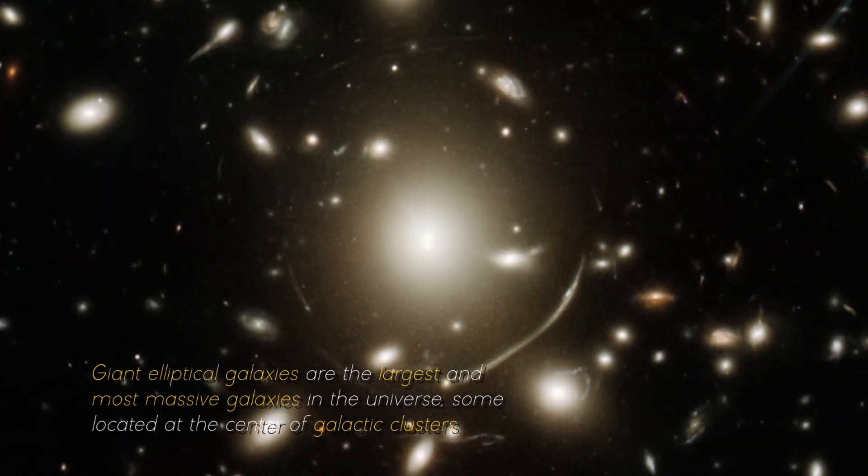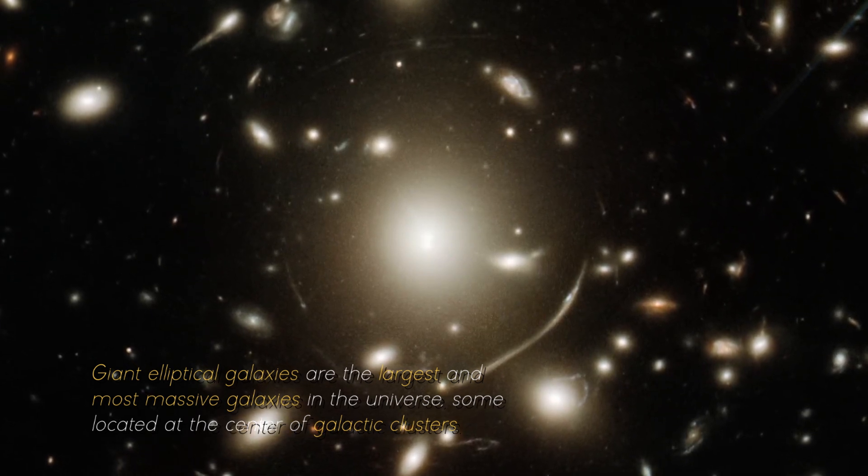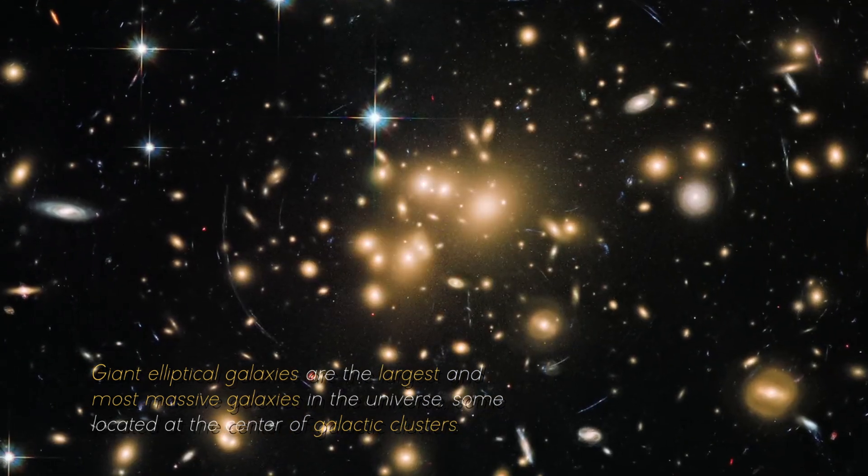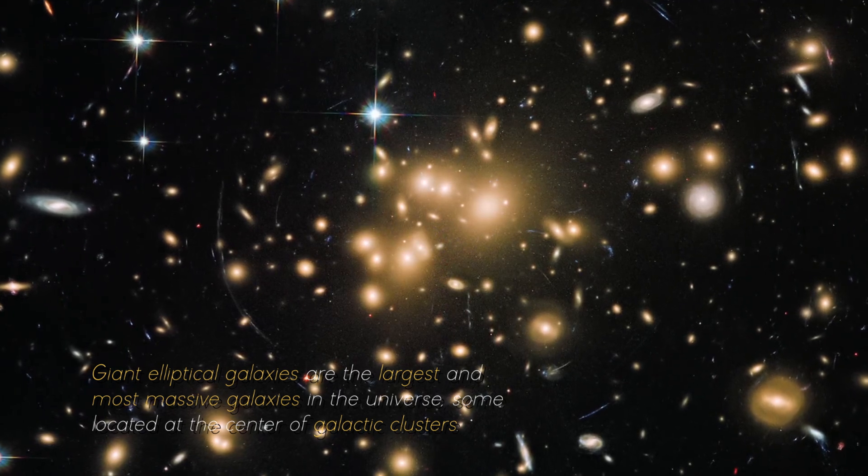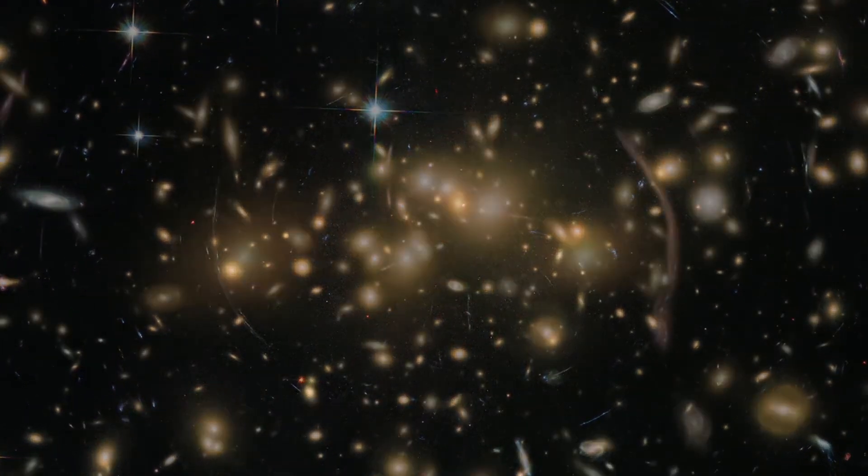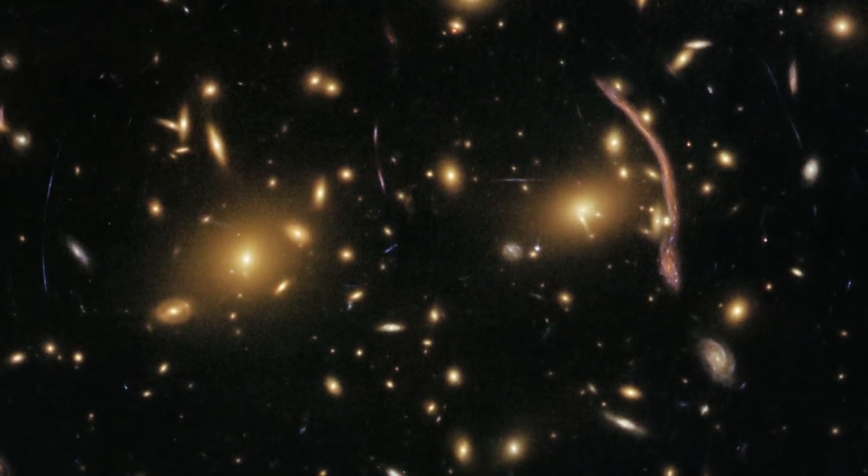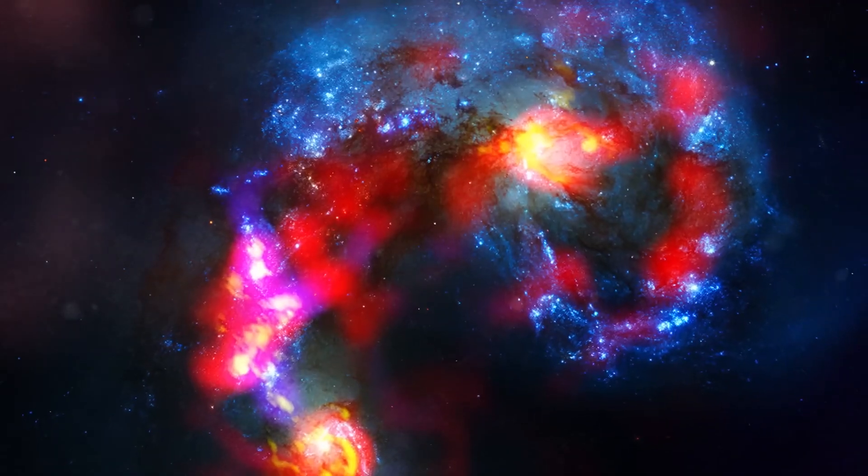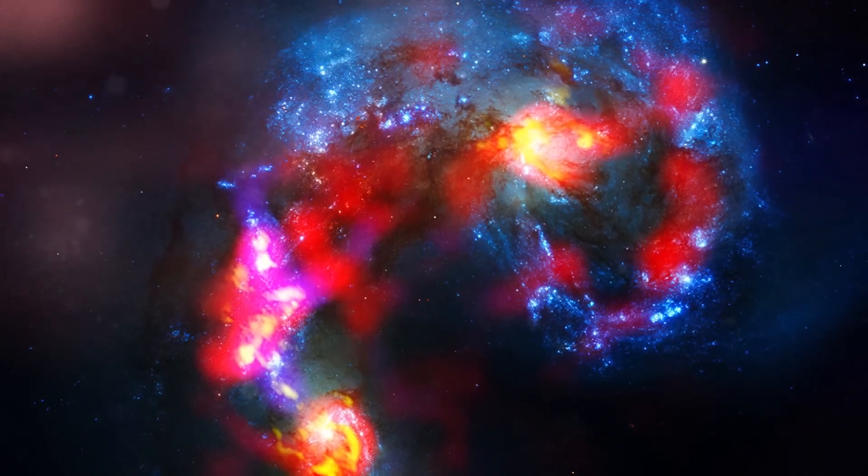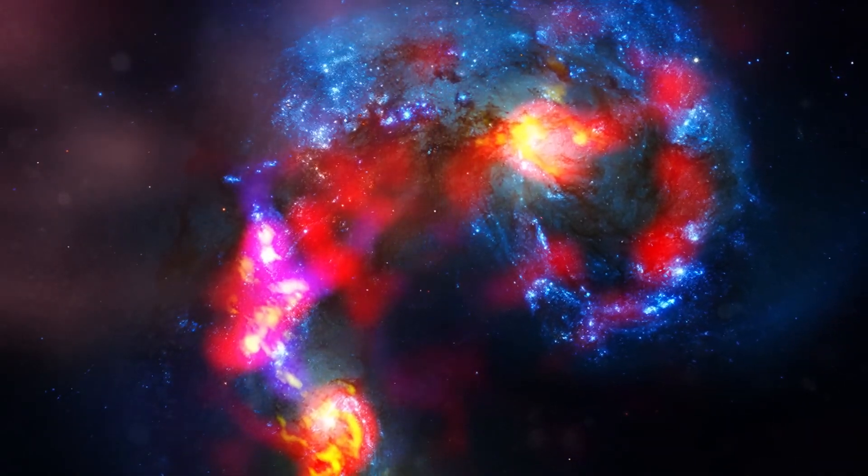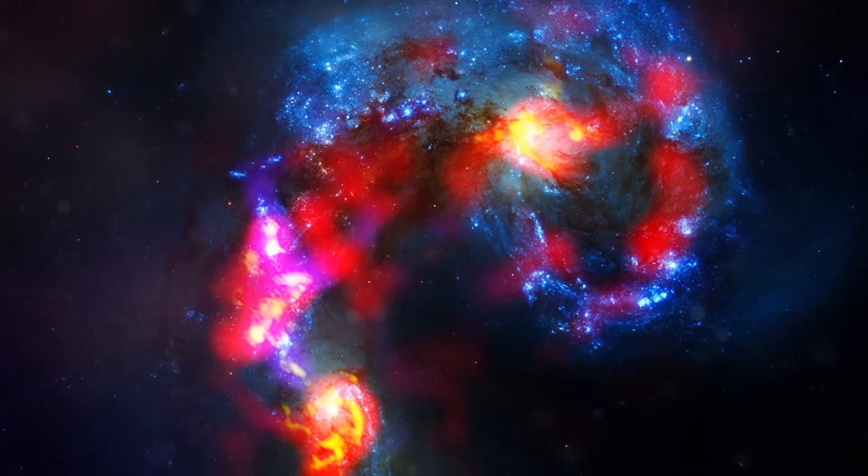Giant elliptical galaxies are the largest and most massive galaxies in the universe, some located in the center of galactic clusters. These galaxies have a smooth, spherical shape composed mostly of old, red stars. They are rare in the early universe, since at that time, most galaxies were still in the process of star formation and had irregular shapes.